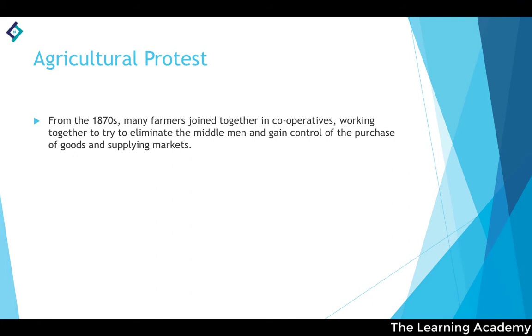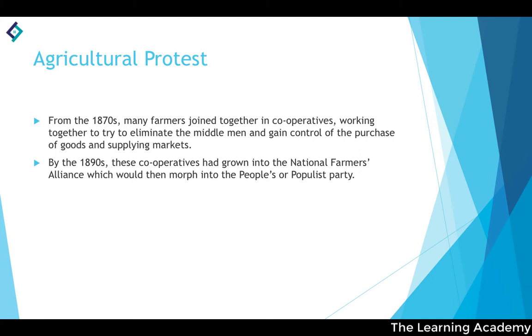Agricultural hardship led to protests. From the 1870s, many farmers joined cooperatives to eliminate middlemen and gain control of their markets. By the 1890s, these cooperatives had grown into the National Farmers' Alliance, which then morphed into the People's — or Populist — Party, representing the unionization of the agricultural community in response to exploitation.